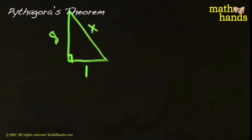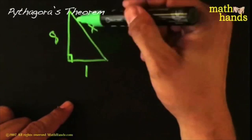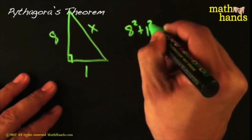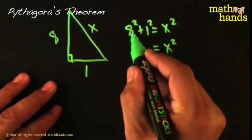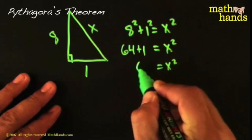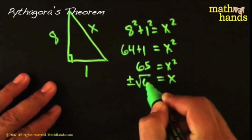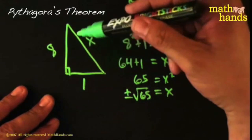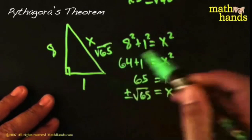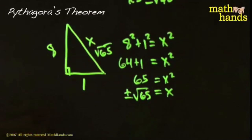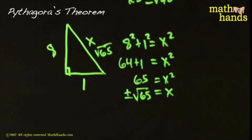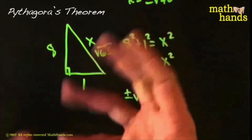Let's do that again. Suppose one leg is 1, the other leg is 8, but you don't know the hypotenuse. Pythagoras says: 8 squared plus 1 squared equals x squared, so 64 plus 1 equals x squared, which means x squared equals 65, so x equals the square root of 65. If you're looking strictly for the length, the answer is the square root of 65, and you're done.